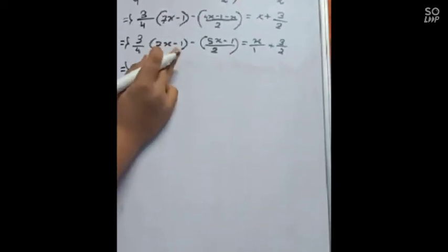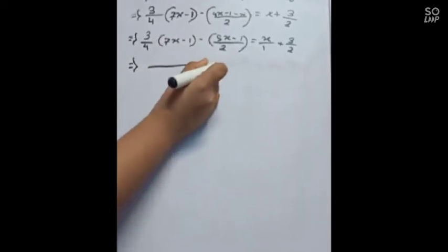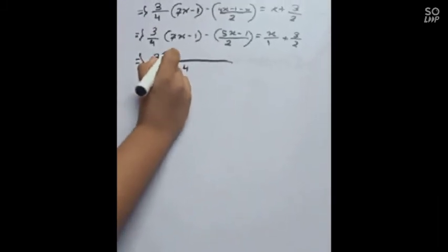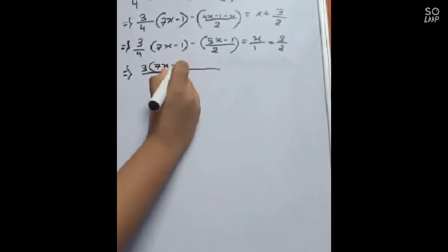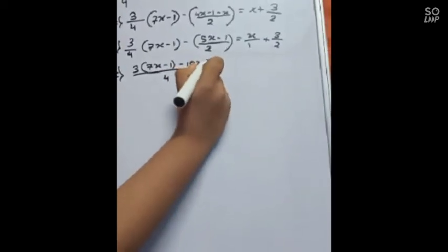Now we will do the whole portion. We will take 4 as a base. To count 3 bracket 7x minus 1 minus 10x plus 2.